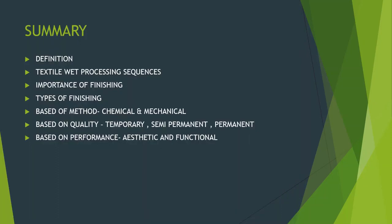Today we have discussed the definition and importance of finishing, and the different types of finishing processes available for textile materials. Based on method: chemical and mechanical finishes. Based on quality: temporary, semi-permanent, and permanent finishes. Based on performance: aesthetic and functional finishes. In the next class, we will see the other parts of the first unit. Thank you, students.